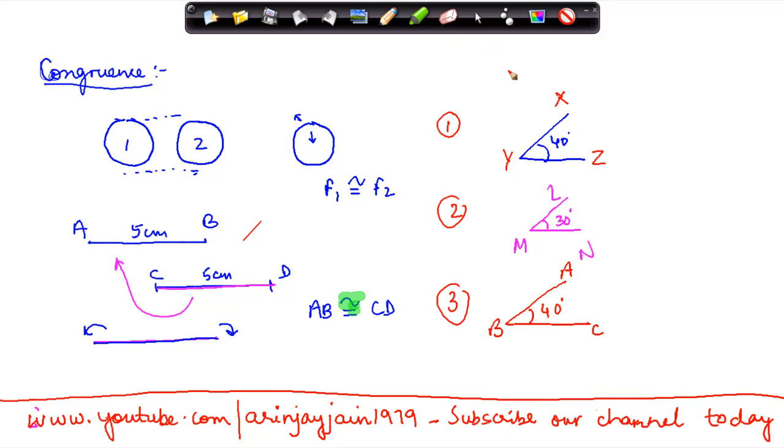Now if I keep angle 2 over angle 1, what will happen? What kind of figure will I get? I will have XYZ which is 40 degrees. Now if you try to keep this over this angle, what will you have to do?